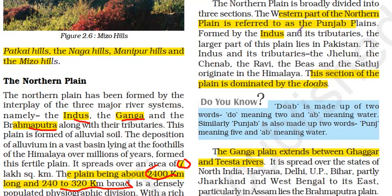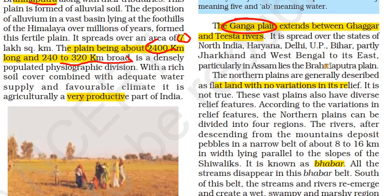The northern plain is divided into three sections. The western part is the Punjab Plains, formed by the Indus and its tributaries — Jhelam, Chenab, Ravi, Beas and Sutlej — with the large portion lying in Pakistan. This section is dominated by Doabs (meaning land between two rivers). The Ganga Plain extends to the Ghaggar and Tista rivers. The third section is the Assam Plain, also known as the Brahmaputra Plain.